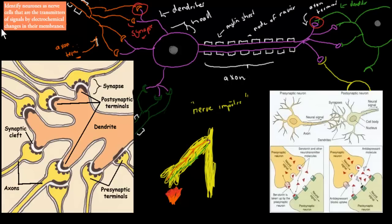The dot point says: identify neurons as nerve cells that are transmitters of signals by electrochemical changes in their membrane. It's interesting because it says electrochemical — electro and chemical — so there must be an electrical part and a chemical part in terms of how these neurons work. I'm going to go over this now, but in much more detail in the next two videos.